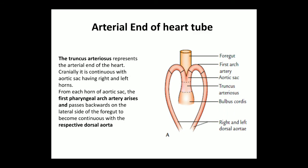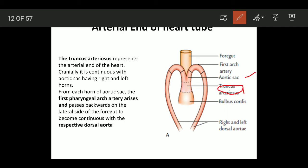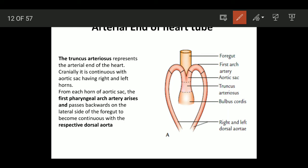The cranial arterial end of the heart tube — the truncus arteriosus — is distally continuous with the aortic sac. The aortic sac has a left horn and a right horn, and each horn is continuous with the respective dorsal aorta via the pharyngeal arch arteries. So truncus arteriosus represents the arterial end of the heart tube, and each horn of the aortic sac continues with the respective dorsal aorta through the pharyngeal arch arteries.